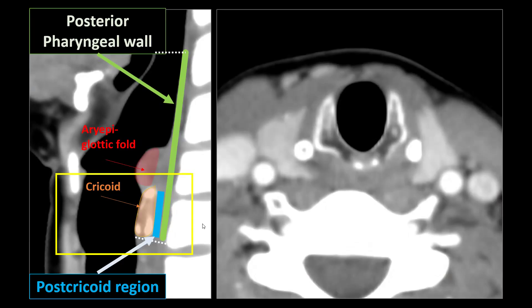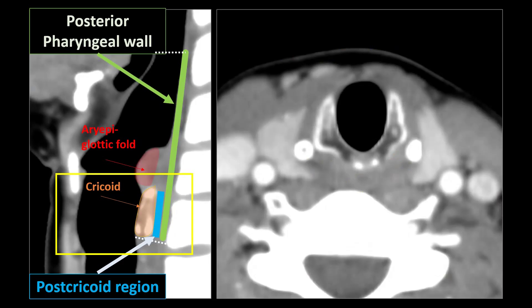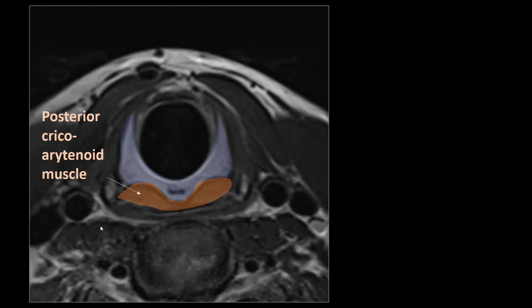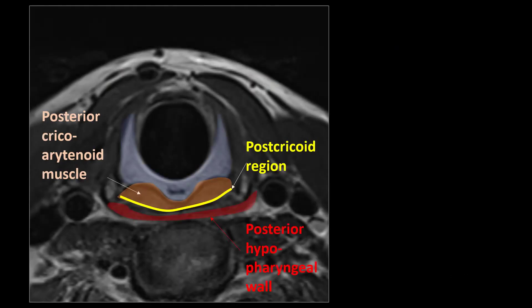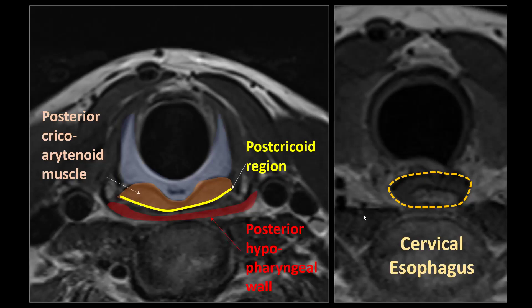On a magnified axial image, we can see the cricoid and the posterior pharyngeal wall. The anterior mucosa posteriorly of the cricoid is the post-cricoid region. The mucosa of the post-cricoid region and the posterior hypopharyngeal wall lie immediately on top of each other, so we can't really see the difference between the two even on high-resolution MRI. A very high-resolution image shows the cricoid, the posterior cricoid-arytenoid muscle, and then a very thin line of mucosa — that's the post-cricoid region. Scrolling down we reach the cervical esophagus.